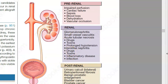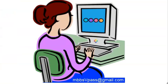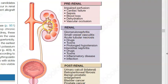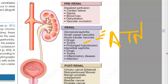Now let us look at renal causes — something to do with glomerular filtration. There can be glomerulonephritis, small vessel vasculitis, acute tubular necrosis (ATN), which can be caused by some drugs or toxins, prolonged hypertension, and interstitial nephritis — again due to drugs, toxins, inflammatory disease, or infection. All of that causes a problem where filtration is not happening. These are the renal causes of acute kidney injury.